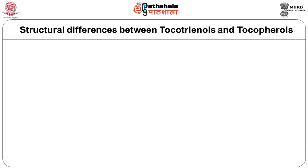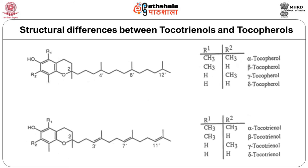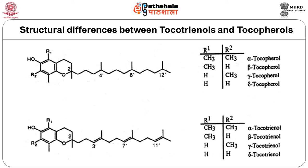The structural difference between tocopherols and tocotrienols: looking at the R1 and R2 groups in the structure, they have similar methyl and hydrogen groups in both. The only difference in tocotrienol is the three double bonds at the 3', 7', and 11' positions in the polyene structure — otherwise they are very similar molecules.